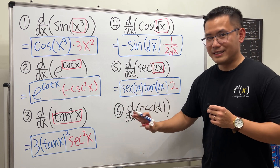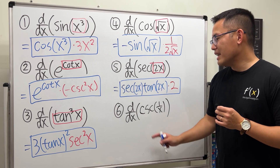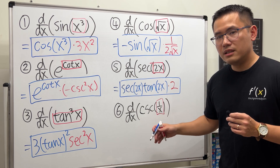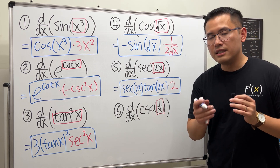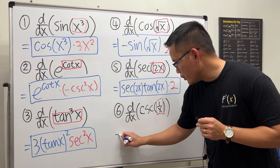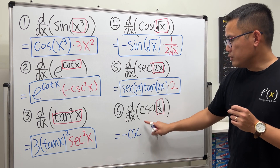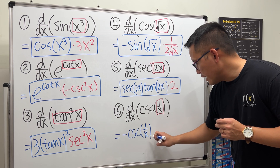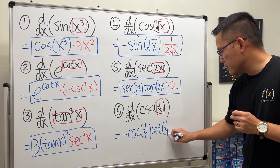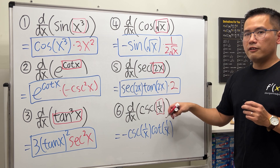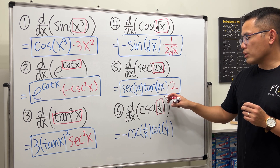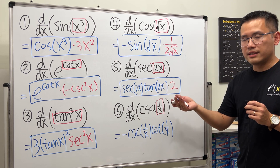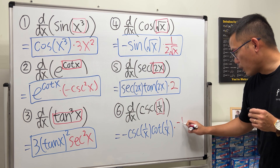Last one: cosecant of 1 over x. The derivative of cosecant is negative cosecant of the inside times cotangent of the inside. So we have negative cosecant of (1/x) times cotangent of (1/x), then multiply by the derivative of 1/x. That's the same as x to the negative 1 — bring the negative 1 to the front, giving negative x to the negative 2, or negative 1 over x squared.